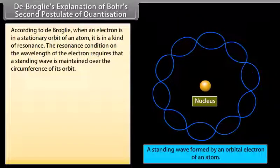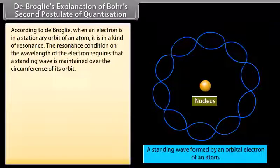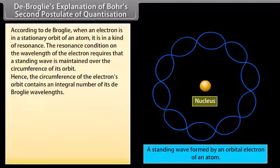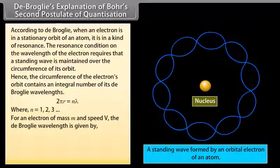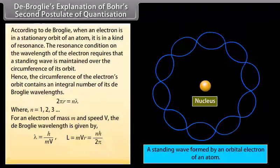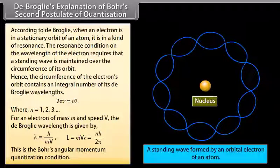De Broglie explained the quantization condition on angular momentum of an orbiting electron. According to de Broglie, when an electron is in a stationary orbit of an atom, it is in a kind of resonance. The resonance condition requires that a standing wave is maintained over the circumference of its orbit. Hence the circumference of the electron's orbit contains an integral number of its de Broglie wavelengths: 2πr = nλ, where n = 1, 2, 3, and so on. For an electron of mass m and speed v, the de Broglie wavelength is h/(mv). This gives mvr = nh/2π, which is Bohr's angular momentum quantization condition.